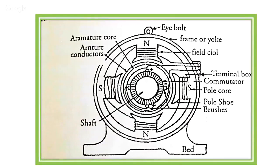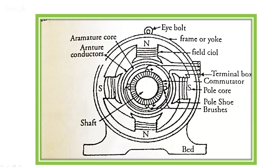This is the sectional view of a DC motor. You can observe here the frame or yoke of the motor, the eye bolt provided for lifting purposes, the poles, the pole shoe, and the field winding placed on the poles. In the central position, the armature core is present, which has slots, and inside the armature slots the armature winding is present. This is the general construction of a DC motor.